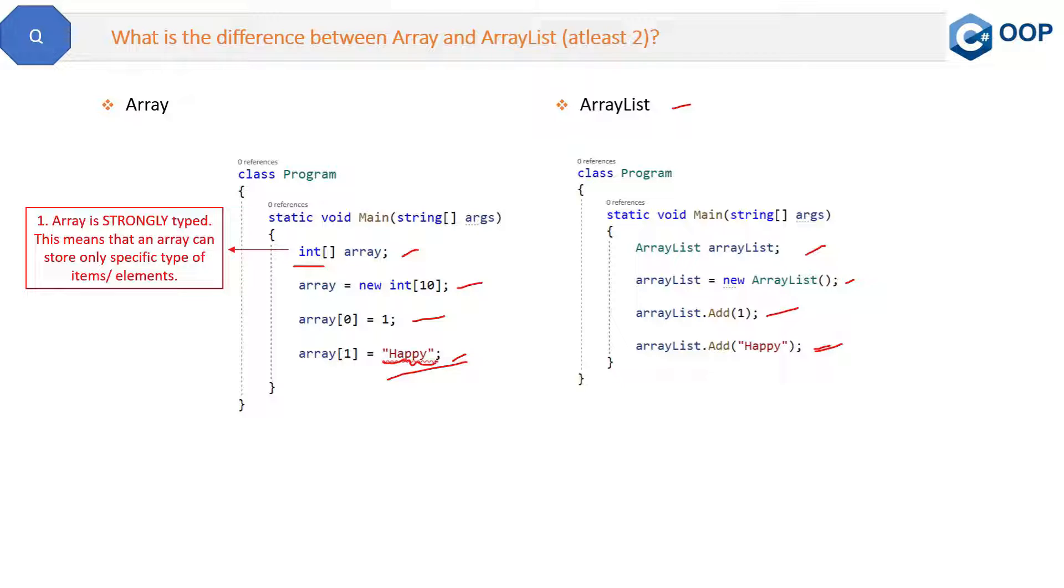So this is about array. So what is ArrayList? ArrayList can store any type of items or elements. So here you can see we can add an integer and we can also add a string to the ArrayList. So this is the first and very basic difference.